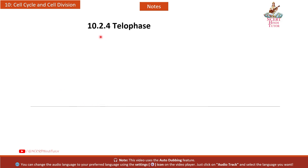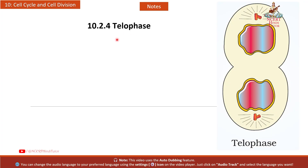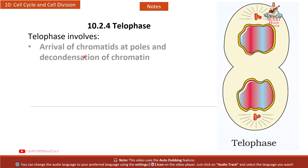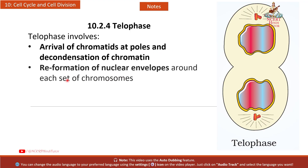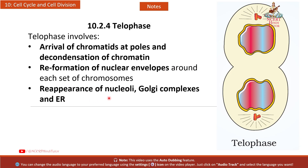10.2.4 Telophase: Telophase involves arrival of chromatids at poles and decondensation of chromatin, reformation of nuclear envelopes around each set of chromosomes, re-appearance of nucleoli, Golgi complexes, and ER.